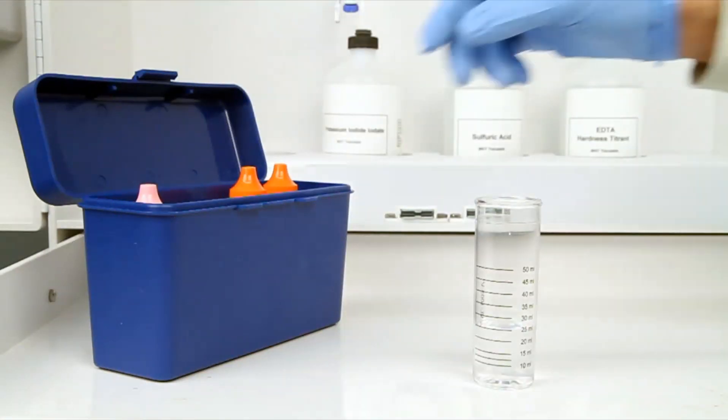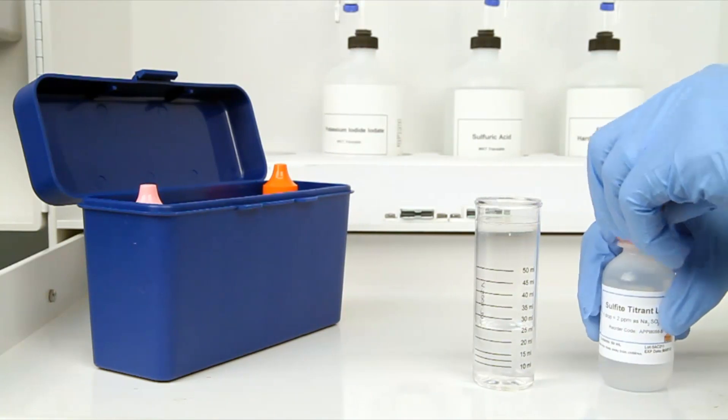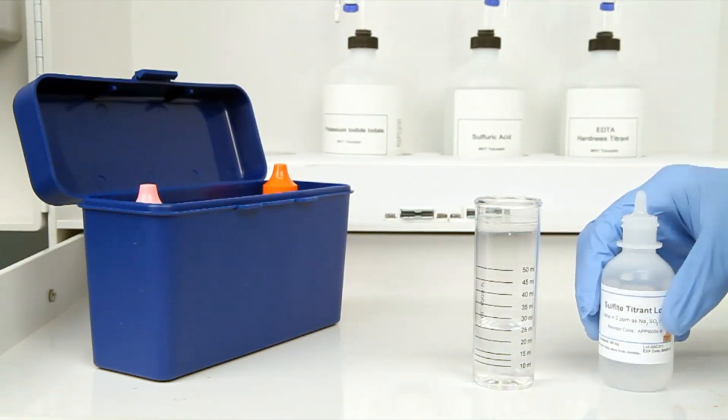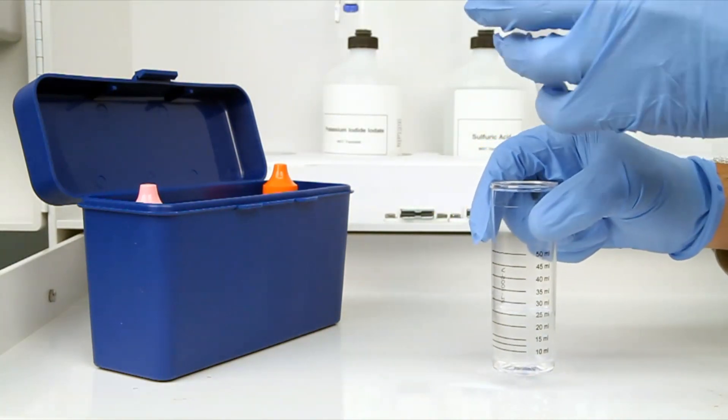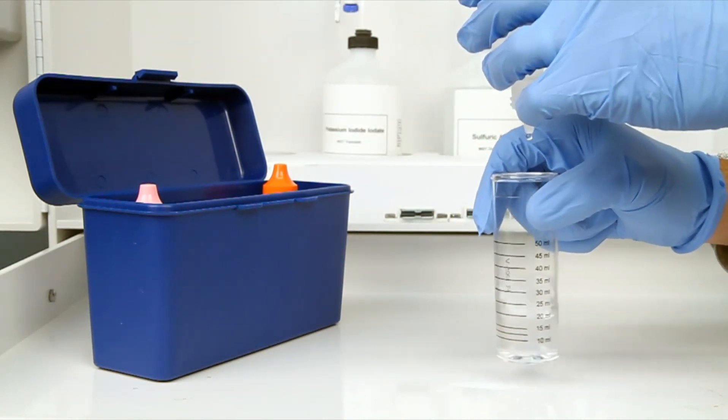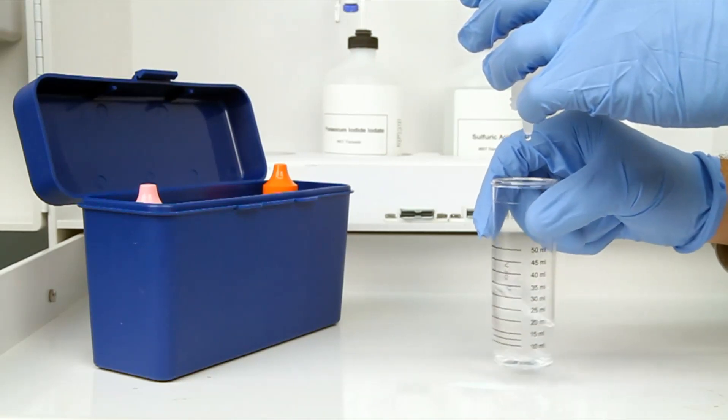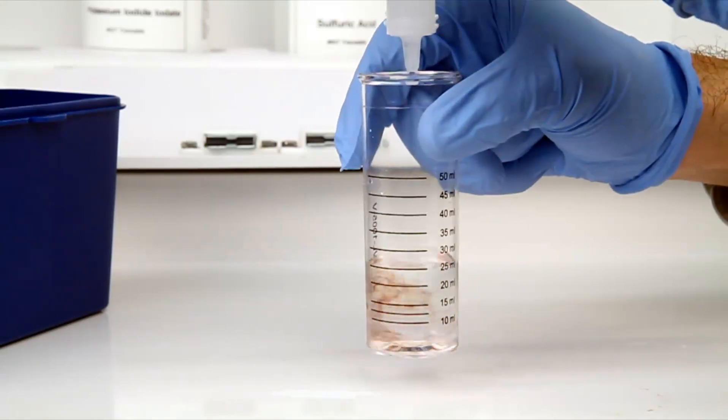The next step according to the endpoint ID procedure is to perform the titration. The bottle of titrant contains a dropper tip, therefore it's important to hold the bottle vertically to make sure you get a consistent drop size. After the addition of each drop of titrant, you want to swirl the vial to make sure the sample is properly mixed.